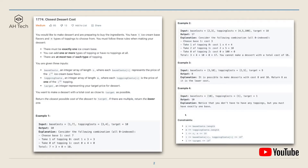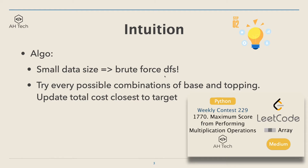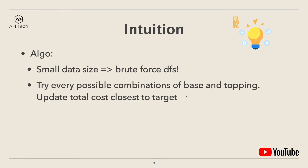The data constraint of this question is a big hint: the size of base cost and topping cost won't be bigger than 10. For such a small data size we can just use a brute force DFS recursion to solve this question, which is the same algorithm used in last week's problem. The main idea is to try every possible combination of base and topping and then update the total cost closest to target. Now let's look at the code.